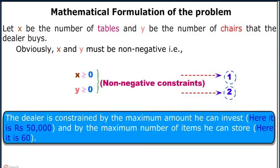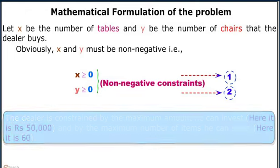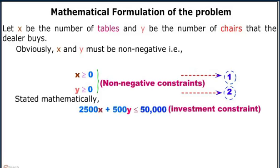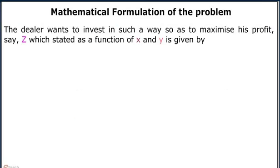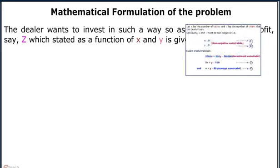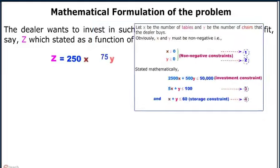The dealer is constrained by the maximum amount he can invest, here Rs 50,000, and by the maximum number of items he can store, here 60. Stated mathematically: 2500x + 500y ≤ 50,000, which is the investment constraint, reduced to 5x + y ≤ 100. Similarly, the storage constraint is x + y ≤ 60. The dealer wants to maximize his profit z, given as z = 250x + 75y. This is called the objective function.